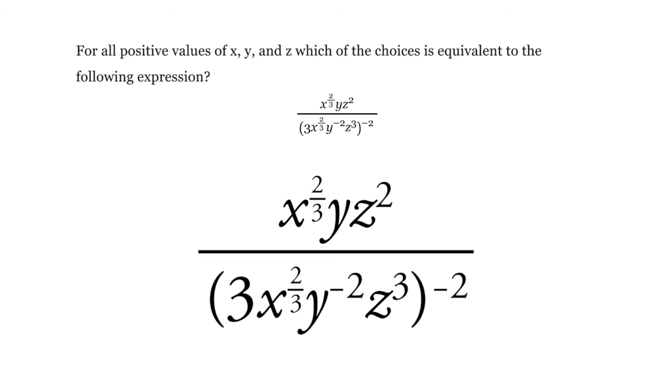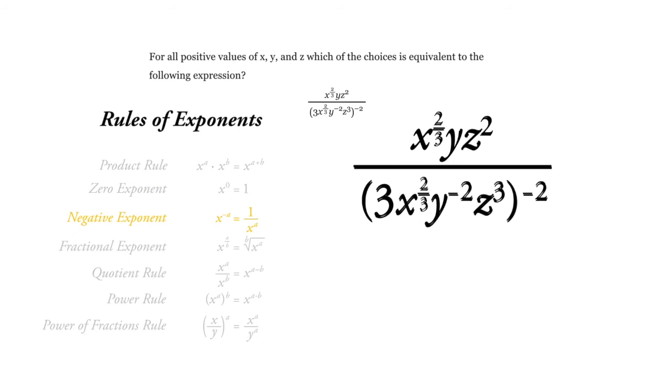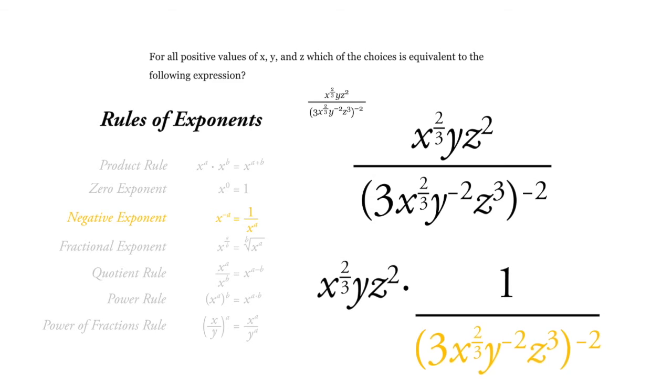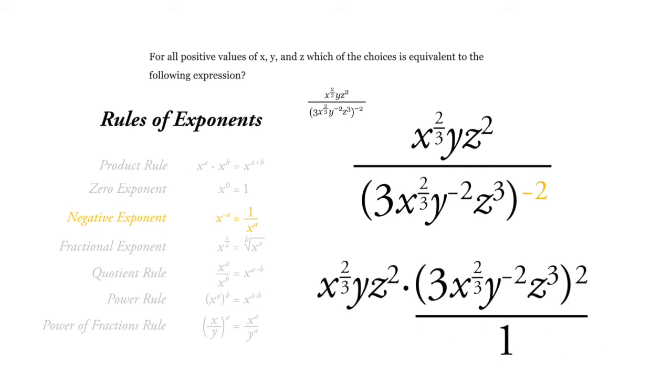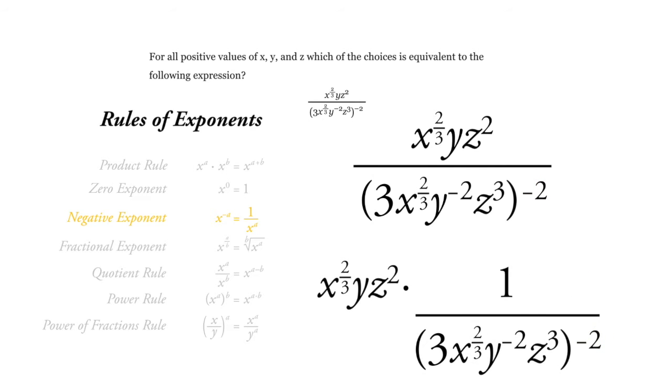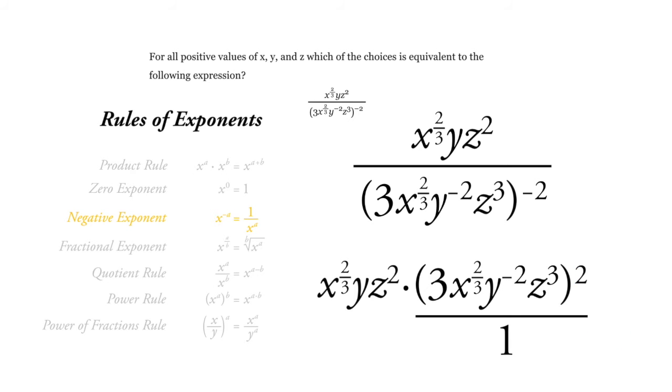And we have that whole thing to the negative 2. So because of this rule here, we can take this whole denominator and move it up as long as we change this negative 2 to a positive 2. So we multiply that exponent by negative 1, and we can move the whole thing up.